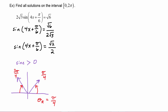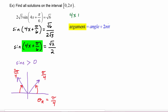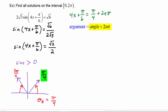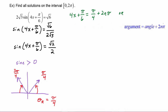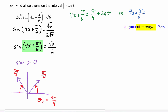We're ready now to make our equations. We take the argument of our function, which is (4x + π/6), and set it equal to the angles we found plus two n pi. The first equation is: 4x + π/6 = π/4 + 2nπ. The second equation is: 4x + π/6 = 3π/4 + 2nπ.